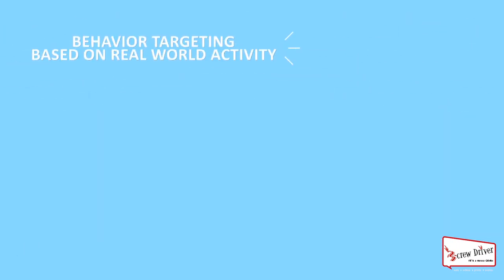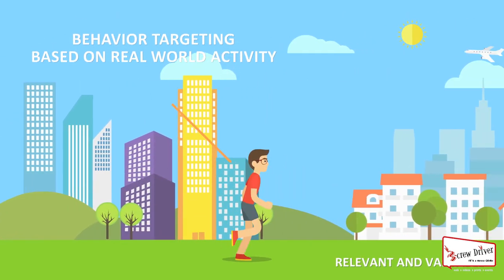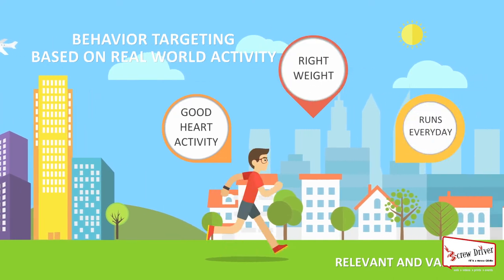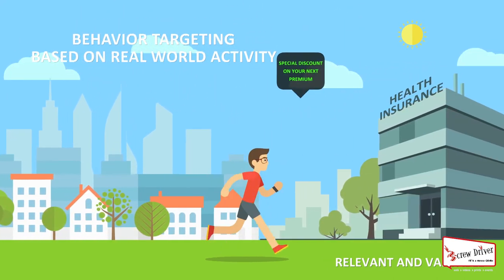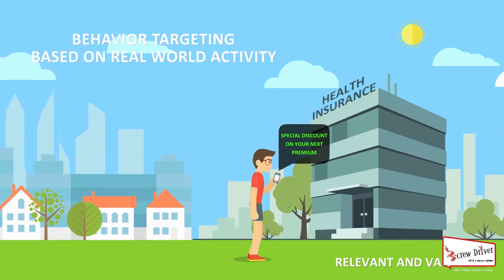These targeting parameters are behavior targeting based on real-world activity. Advertisers can reach out to their audience with customized brand messages and offers that are based on the user's past behavior and real-time data tracked across connected devices and apps.